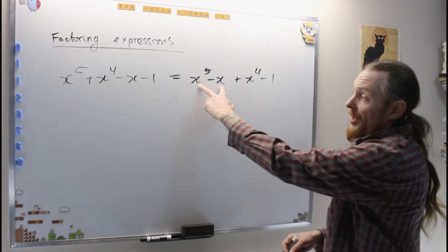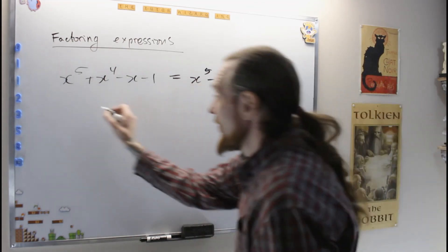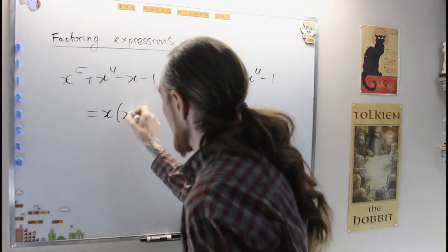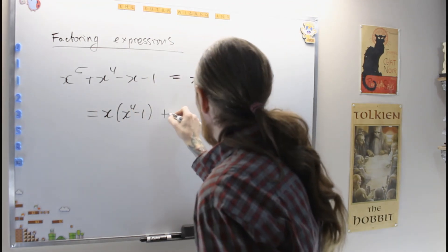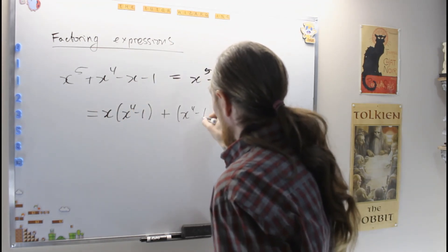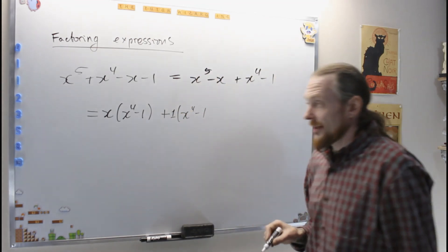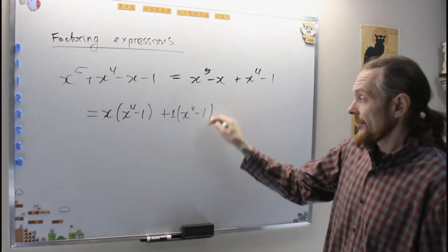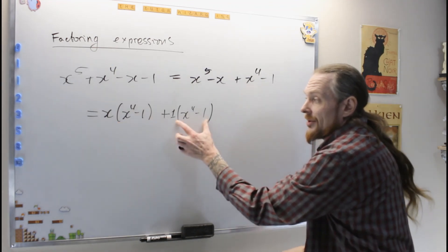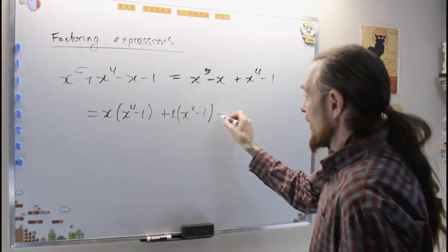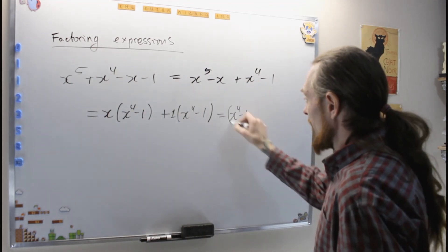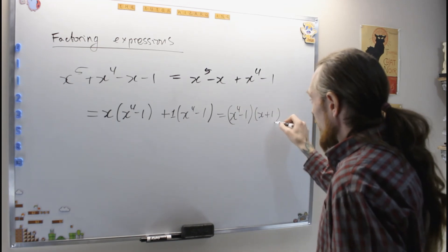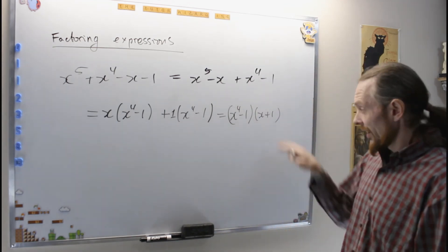And now I'm trying to be as clever as I can to factor something out of this. So now I see that these both have x in them, so I'm going to factor an x out of those. That's x times x to the 4 minus 1 plus x to the 4 minus 1, which is actually 1 times x to the 4 minus 1. Now I have this in both terms, so I can factor it out. That is equal x to the 4 minus 1 times x plus 1.